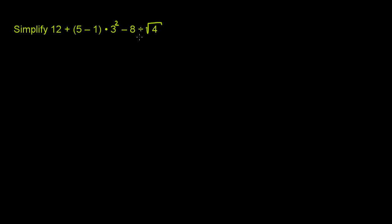Whenever you see something like this, you want to put your brain into order of operations mode. The top priority goes to parentheses. Then after that, we do exponents — and we also consider square roots to be an exponent. You'll learn in the future that the square root is really raising something to the 1/2 power; that's why it's the same thing as an exponent. Then we do multiplication and division. And finally, you do addition and subtraction.